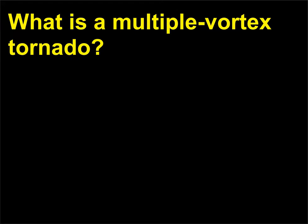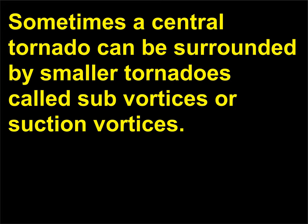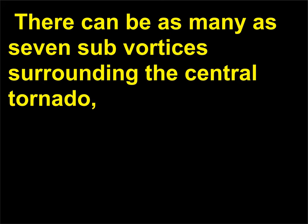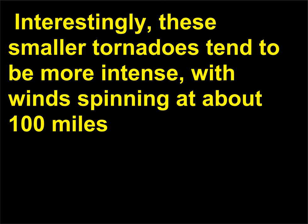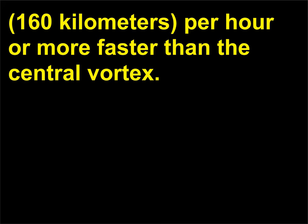What is a multiple vortex tornado? Sometimes a central tornado can be surrounded by smaller tornadoes called subvortices or suction vortices. There can be as many as seven subvortices surrounding the central tornado, though 2 to 5 is more common. Interestingly, these smaller tornadoes tend to be more intense, with winds spinning at about 100 miles (160 kilometers) per hour or more faster than the central vortex.